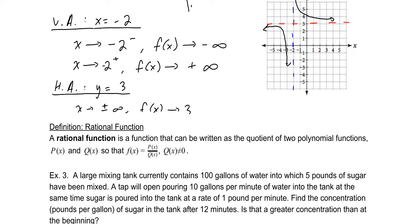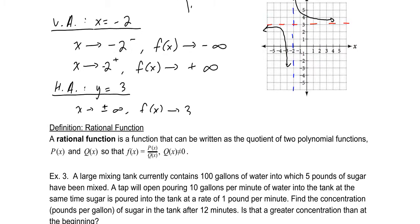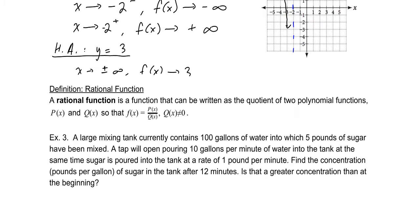This brings us to the definition of a rational function. A rational function is a function that can be written as a quotient of two polynomials p of x and q of x, so our function is p of x divided by q of x, where q of x is not equal to zero. We still cannot divide by zero — that restriction will not change.